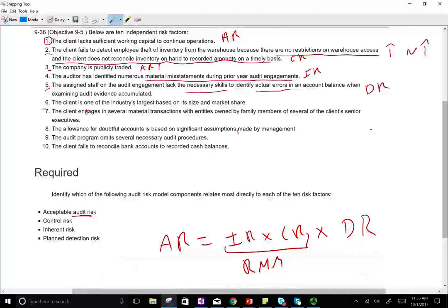Number six, the client is one of the industry's largest based on its size and market share. This is similar to the company being publicly traded. We have more users. When we have more users, this is affecting the audit risk because more people are looking over your shoulder. If something goes bad, you're going to be in a bigger problem. That's why you have a lot of audit risk there.